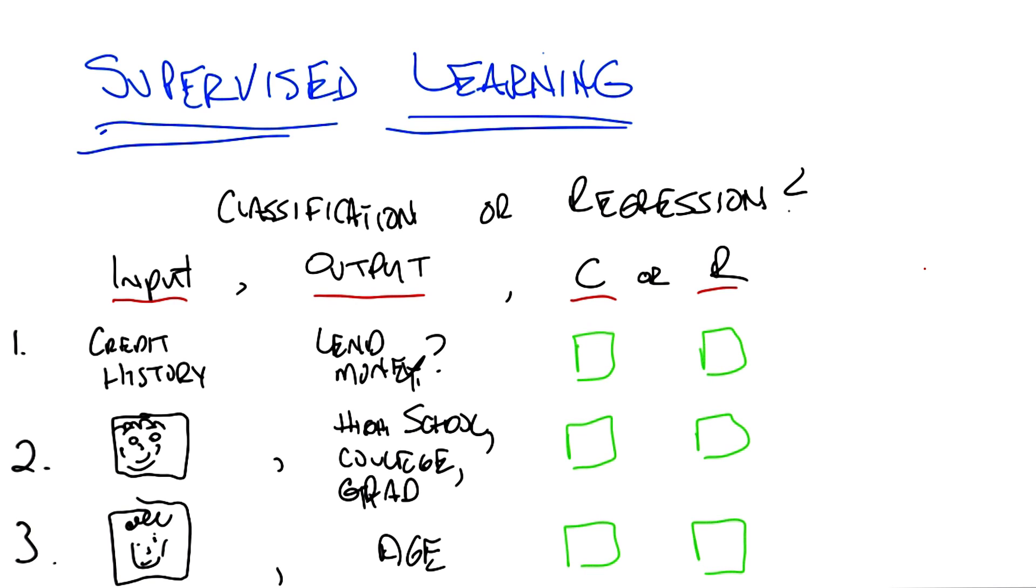The third question is very similar. The input is again a picture. And the output is a guess of the actual age of that person: 17, 24, 23 and a half, whatever. So take a moment and try to decide whether these are classification tasks or regression tasks.